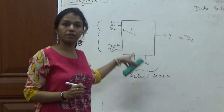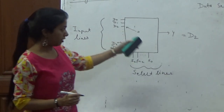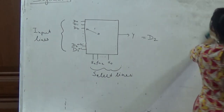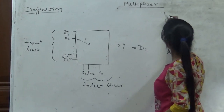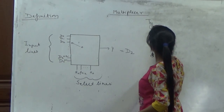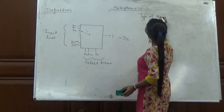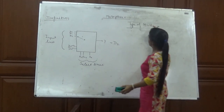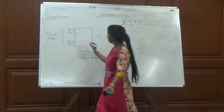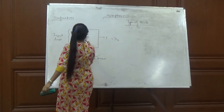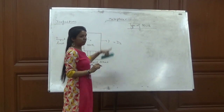How do the select lines control the operation of the multiplexer? That we will discuss in the next part. Basically, MUX is a short form of multiplexer, so don't get confused. When I write MUX, it is a short form of multiplexer.